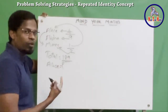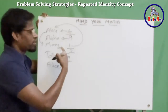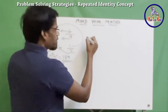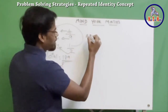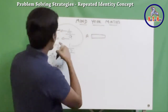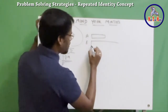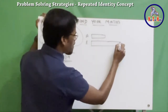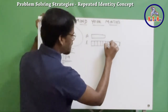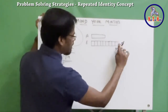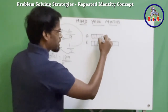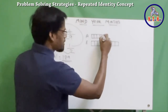This problem can be solved using the model method as well as the units method — I'll cover both. Let's start with the model method. We draw the model for the first fraction: Alice has four out of nine, so Alicia has nine units — one, two, three, four, five, six, seven, eight, and nine. Alice has four units out of those nine.